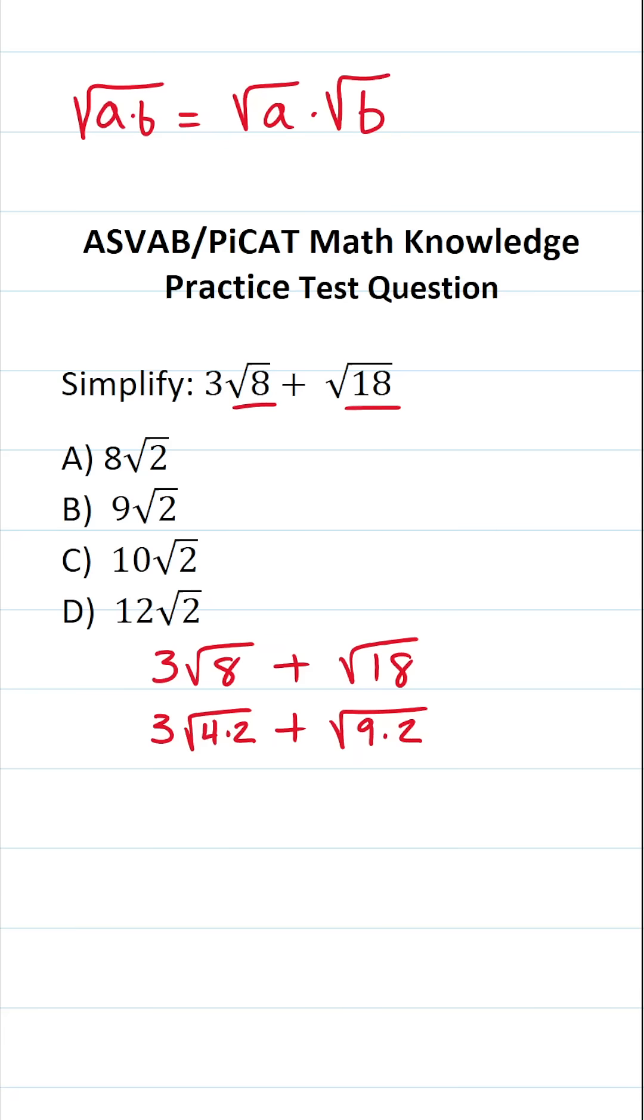So that's what we're going to do for our next step. This is going to become 3 times the square root of 4 times the square root of 2 plus the square root of 9 times the square root of 2.